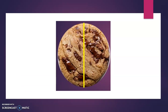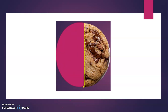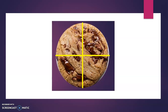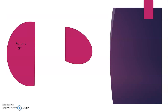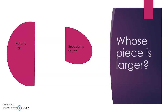Peter only has two cookie pieces. So let's color in one of Peter's pieces. Now let's color in one of Brooklyn's cookie pieces. There's Peter's half and there's Brooklyn's fourth. Look at them side by side — whose piece is larger?